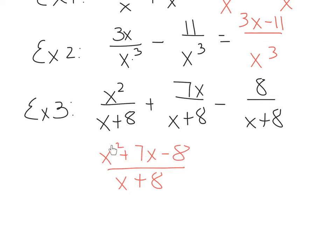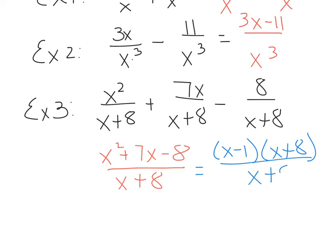If you notice, this trinomial right here is a standard trinomial — we should try to factor it, because if it factors, it may reduce with this x plus 8. The factors of x squared plus 7x minus 8 are x minus 1 and x plus 8. If you need a review of factoring, look at some previous videos. This x plus 8 is a binomial, so these x plus 8s cancel, and our final answer is x minus 1.